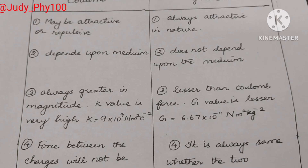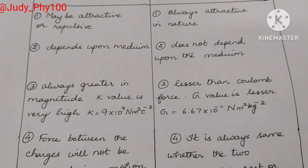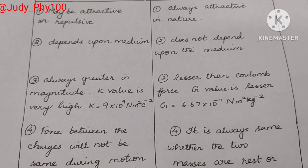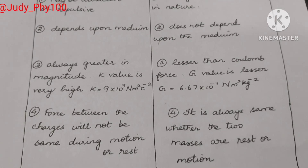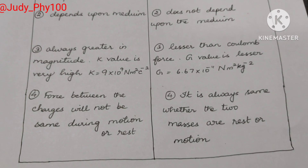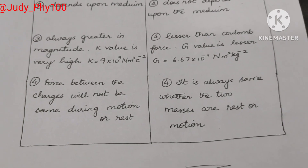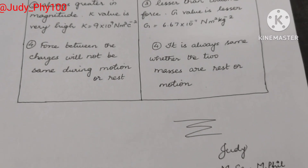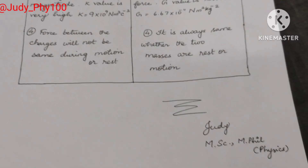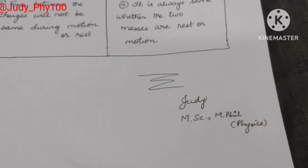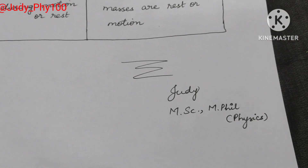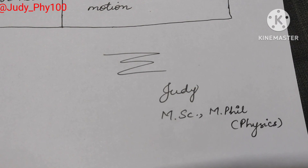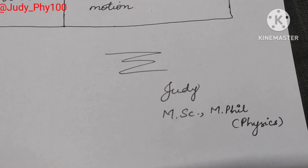Third difference: Coulomb's force is always greater in magnitude — it is very strong because k value is 9 into 10 to the power 9 newton meter square per coulomb square — whereas gravitational force is less, because g is equal to 6.67 into 10 to the power minus 11 newton meter square per kilogram square. Fourth difference: the force between charges is not the same during motion or rest, whereas the force between two masses is always the same whether they are at rest or in motion.